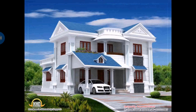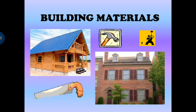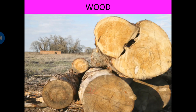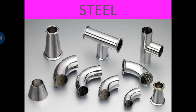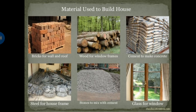Now we see pakka house. Examples of pakka house are bungalows, buildings, and apartments. To make a pakka house, we need different building materials like iron, wood, steel, bricks, and cement. So these are the different materials which help us to make a pakka house.